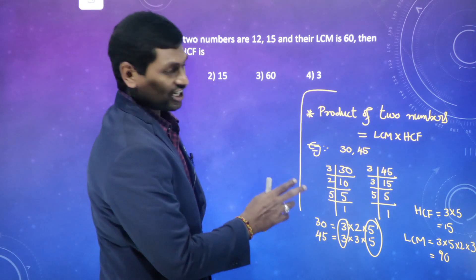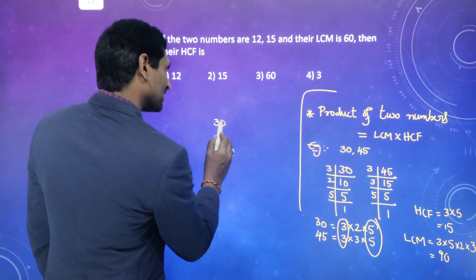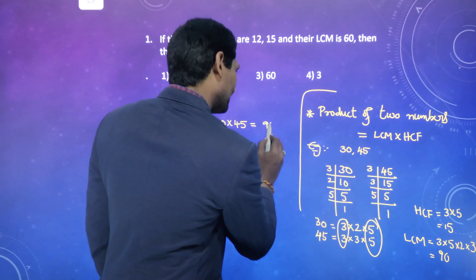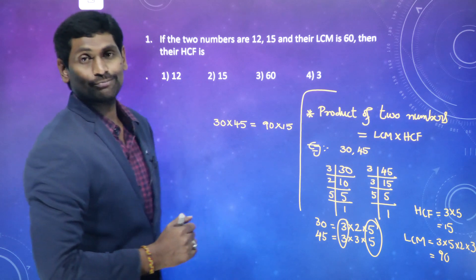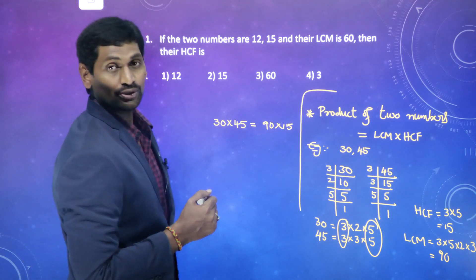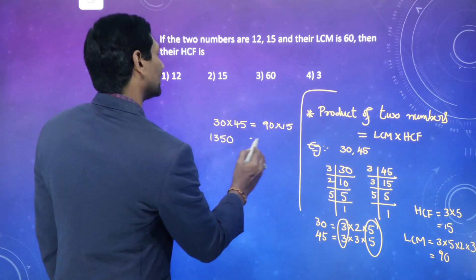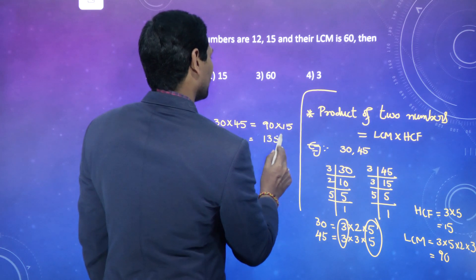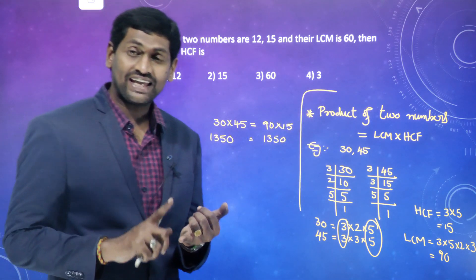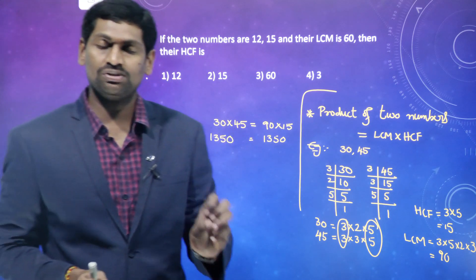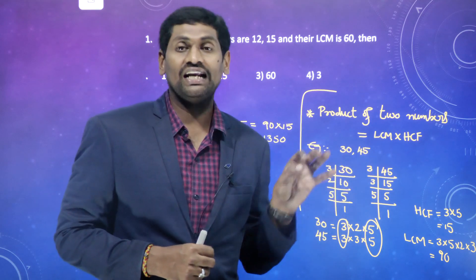Now according to the relation, product of 2 numbers — 30 × 45 — should equal LCM × HCF = 90 × 15. Let us check: 30 × 45 = 1350. For the RHS: 90 × 15 = 1350. Both sides are equal. For any 2 numbers — composite, prime, or co-primes — LCM × HCF always equals the product of those 2 numbers.